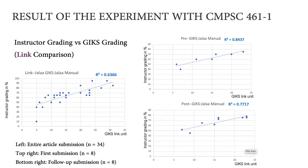The top right graph is the link comparison of the similarity of GICS grading compared to the instructor grading. It shows that R-squared is 0.8437, meaning the correlation is about 92%, and again, a similar result.